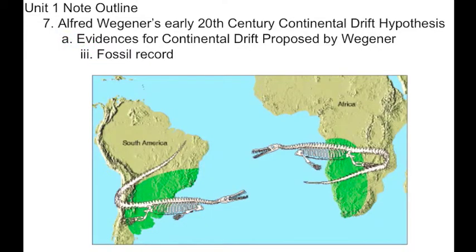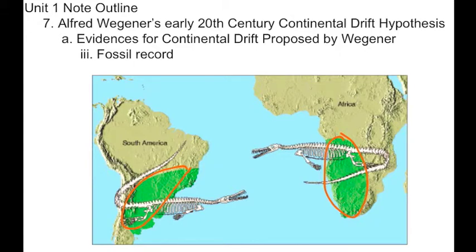A third really strong evidence for continental drift — the idea that continents have been slowly moving apart over time — is that we find similar fossils where the land looks like it used to have once been together. And these are fossils of plants and animals that could not have crossed vast oceans.